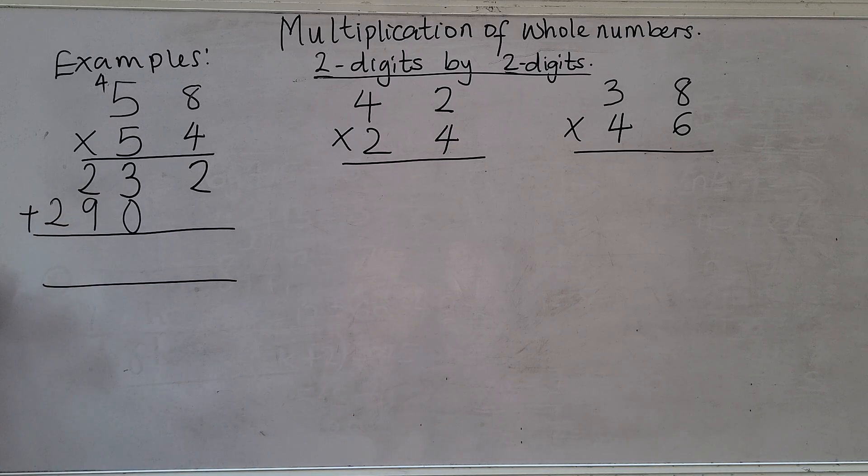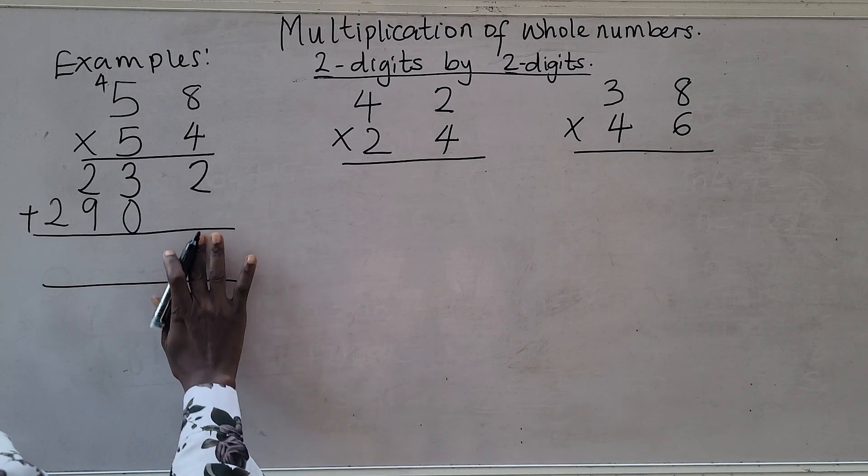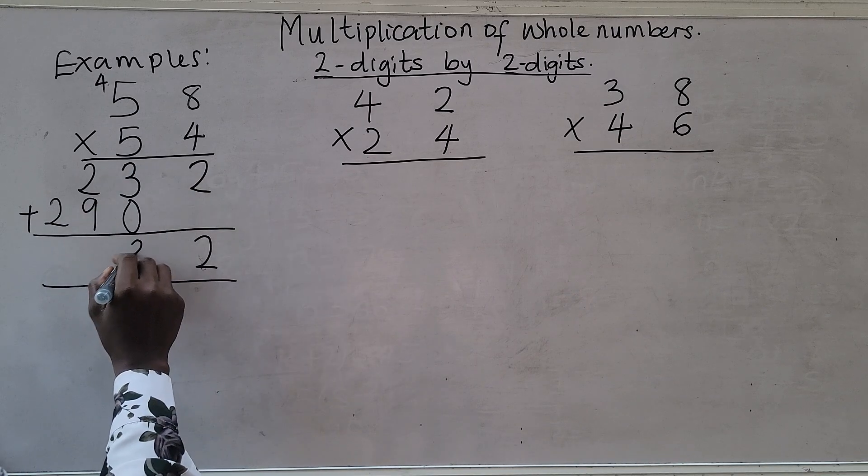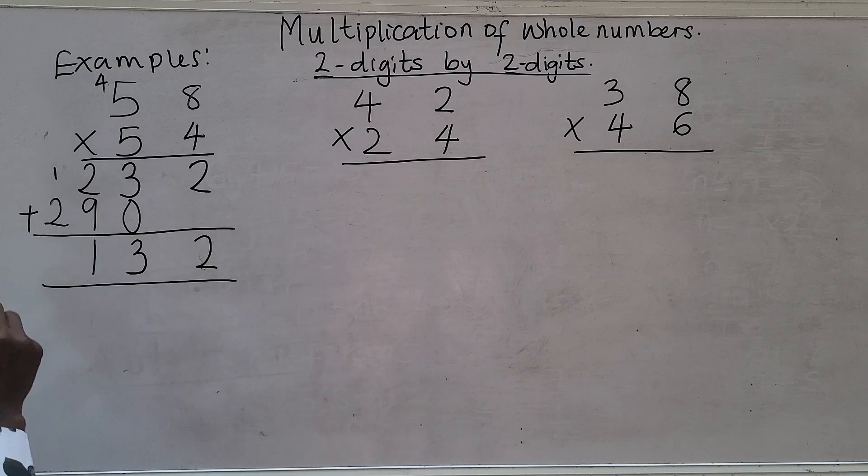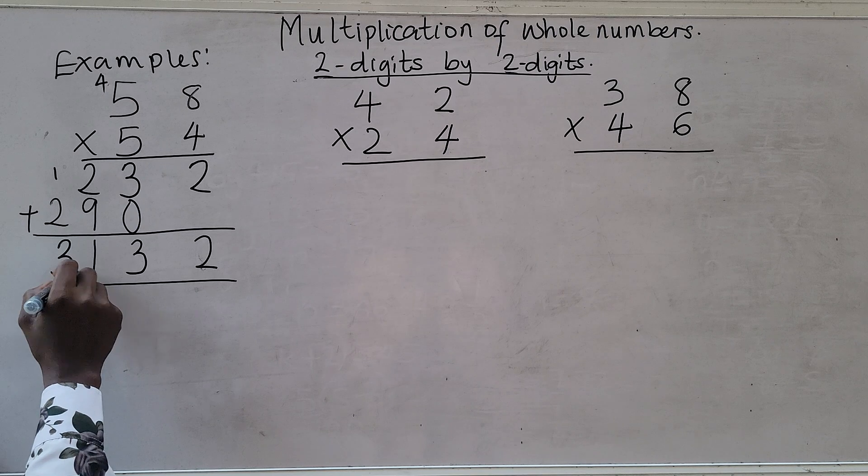And add up. So two plus nothing is two. Three plus nothing is three. Nine plus two is eleven. Write one and bring your one here. One plus two is what? Three. So my answer is 3,132. We have solved that.